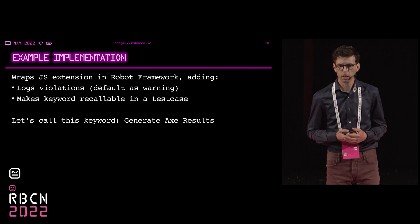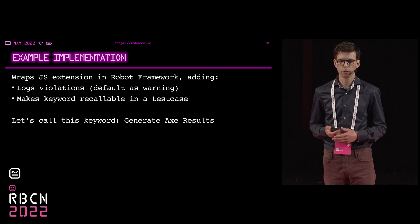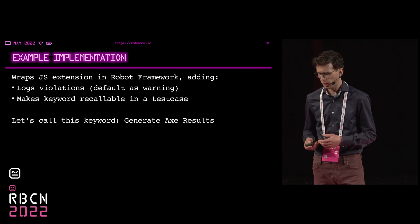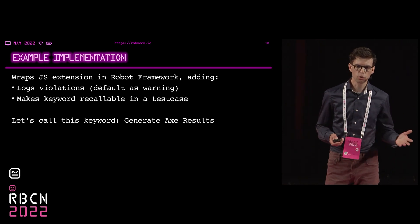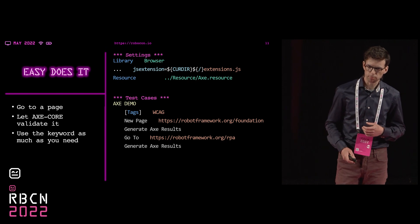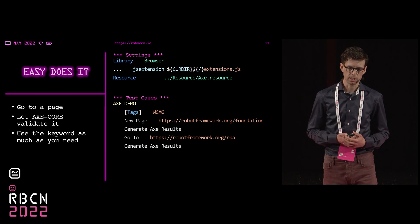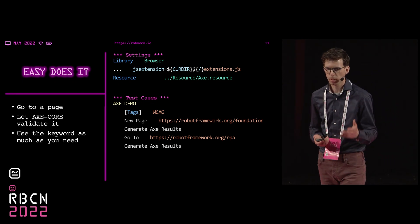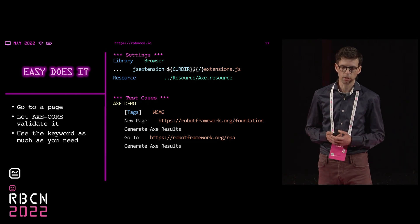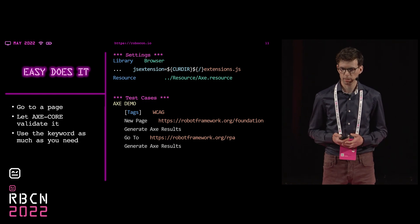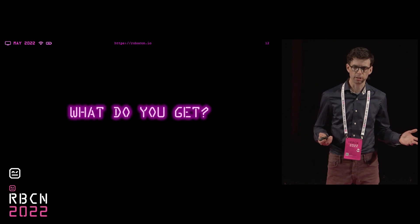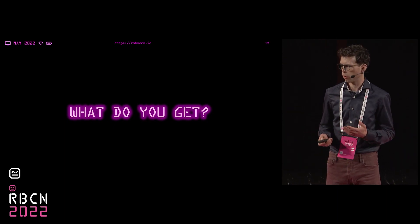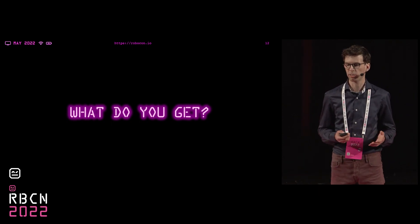I've made an example implementation where I wrap this JavaScript functionality so that it logs the violations. It also makes the keyword callable as many times in your test case as you like — let's call this keyword 'generate Axe results'. This is an example of one of these test cases: you go to a new page, in this case robotframework.org/foundation, create the Axe results, then go to robotframework.org/RPA and create the results again. It's literally just one keyword to check all accessibility rules.